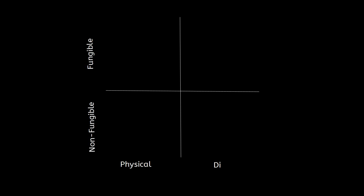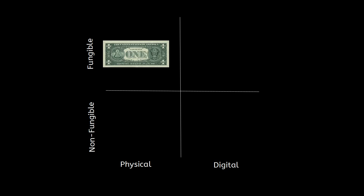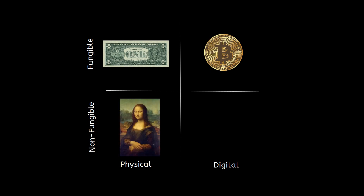To better understand, let's divide everything in the world into fungible or non-fungible, physical or non-physical. For example, a dollar is physical and fungible — I can give you a dollar and you can give me back four quarters. The value is the same and they are treated as identical. A Bitcoin is a digital example of a fungible asset. Non-fungible is something that is unique. This original painting is something that is physical and non-fungible, as it's one of a kind. Of course there can be a thousand copies of this, but there is only and only one masterpiece.